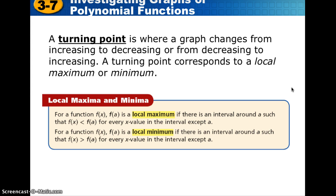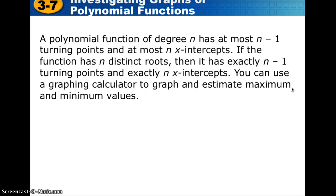Let's talk about turning points. A turning point is where a graph changes from increasing to decreasing or from decreasing to increasing, and it's where we have a local maximum or local minimum. A polynomial of degree n has at most n x-intercepts or real zeros and n minus 1 turning points. Multiplicity can affect this, and imaginary roots can decrease the number of x-intercepts we see, but that's the general rule of thumb.